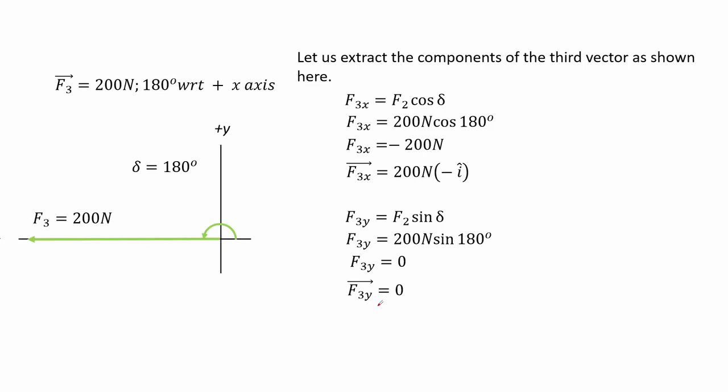For the third vector, we see that it simply lies along the negative x axis and clearly has no y component. It has only an x component which is 200 newtons, and it is negative, indicating that it is going in the negative x axis.